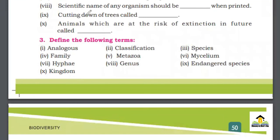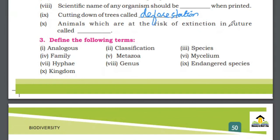Number 8: Cutting down of trees is called Deforestation. Number 9: Animals which are in danger of extinction in the future are called Endangered Species.